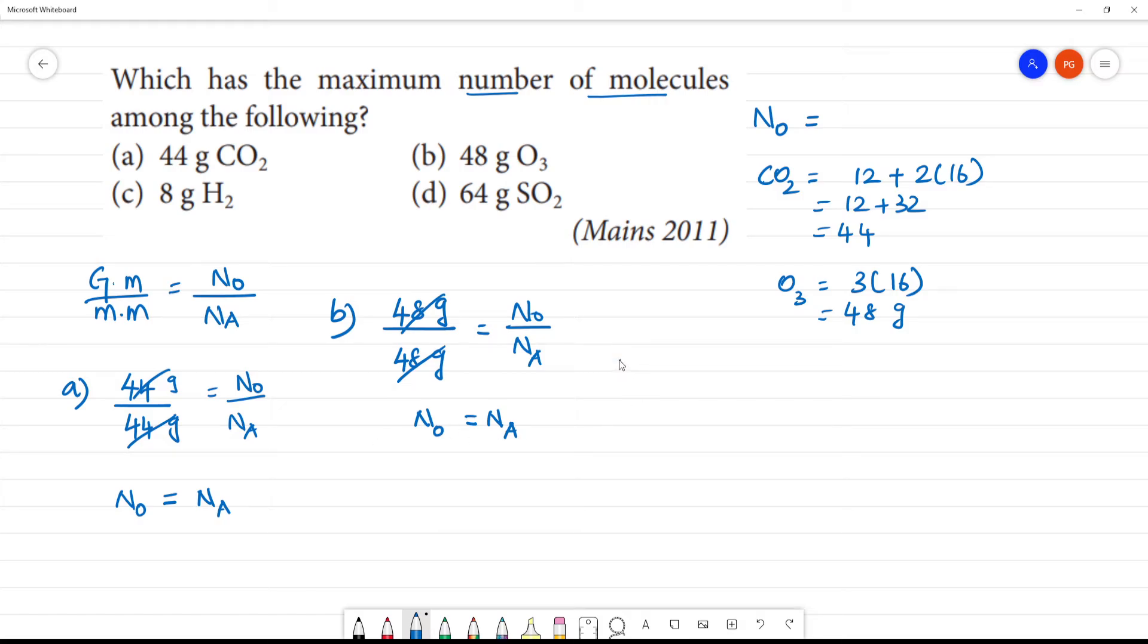Option C: 8 grams of H₂. Molecular mass of H₂ is 2 times 1, which equals 2. So 8 grams divided by 2 equals N₀/Nₐ. This gives us 4 equals N₀/Nₐ, so N₀ equals 4 times Nₐ.